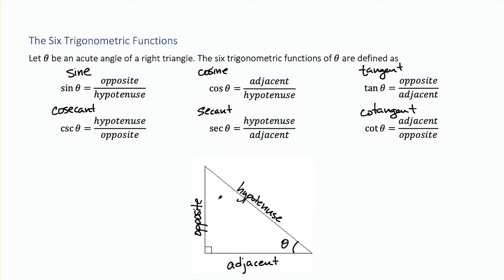Because we're talking about a right triangle, all right triangles with a given angle theta will be similar to each other. That means it doesn't matter what size triangle you have — if you have a right triangle with a right angle and an angle theta, then each of these quotients is fixed and won't change depending on the size of the triangle.